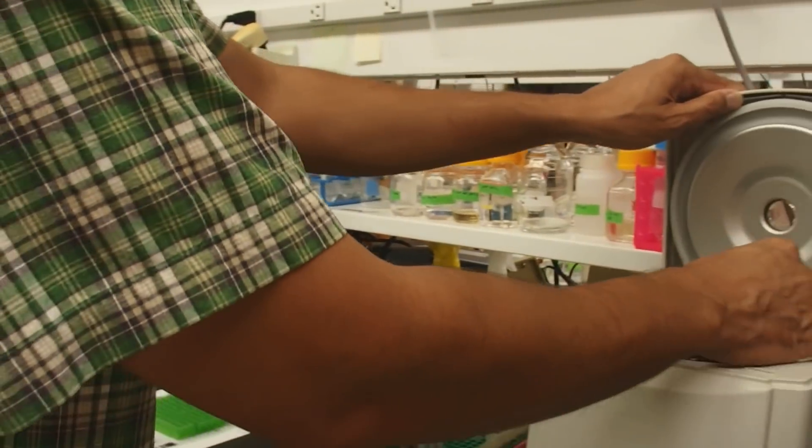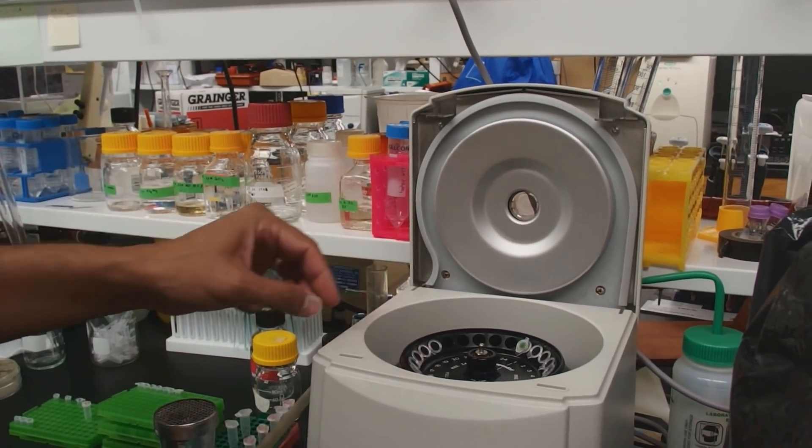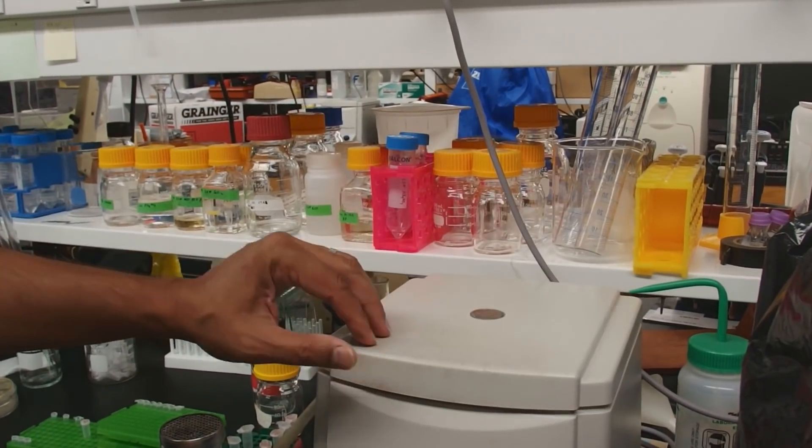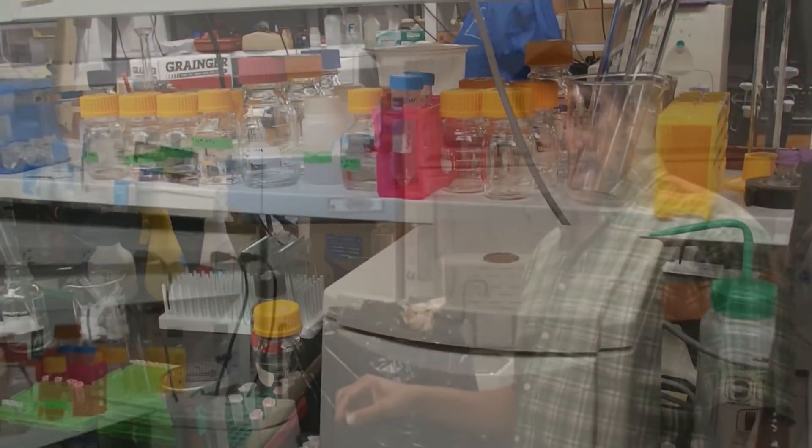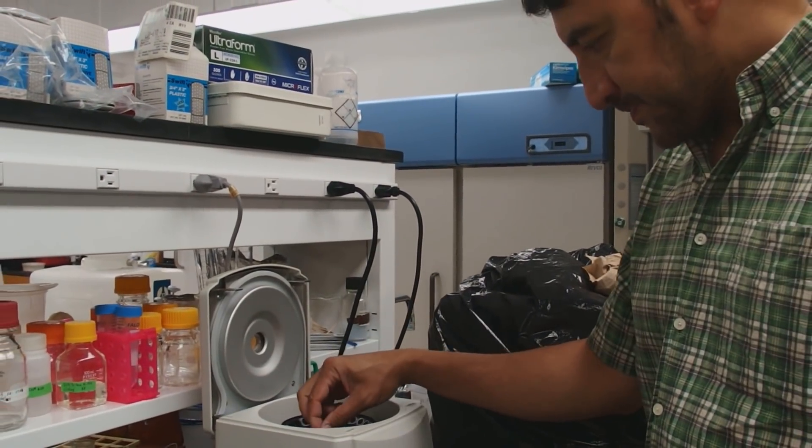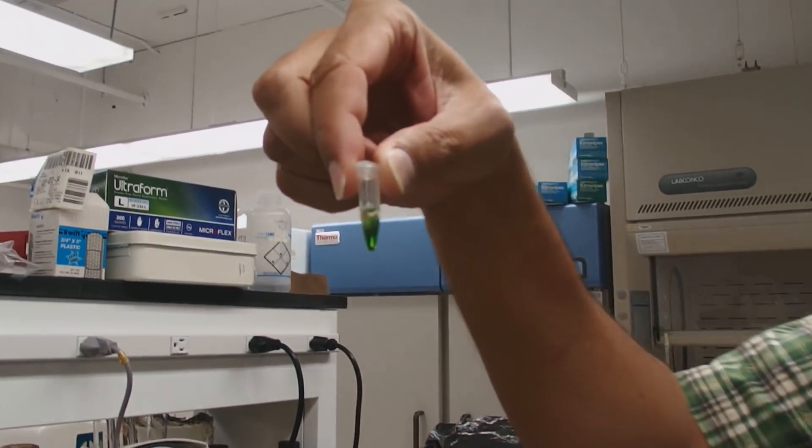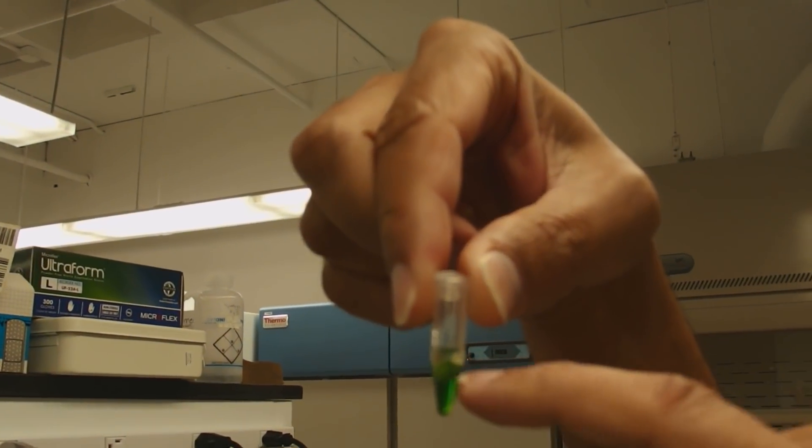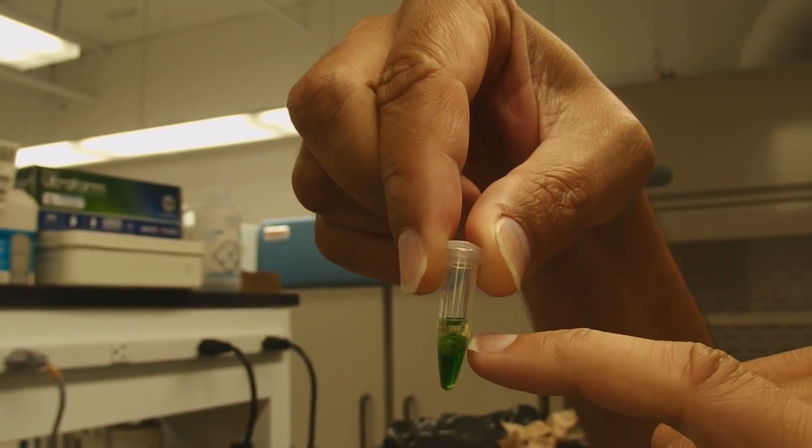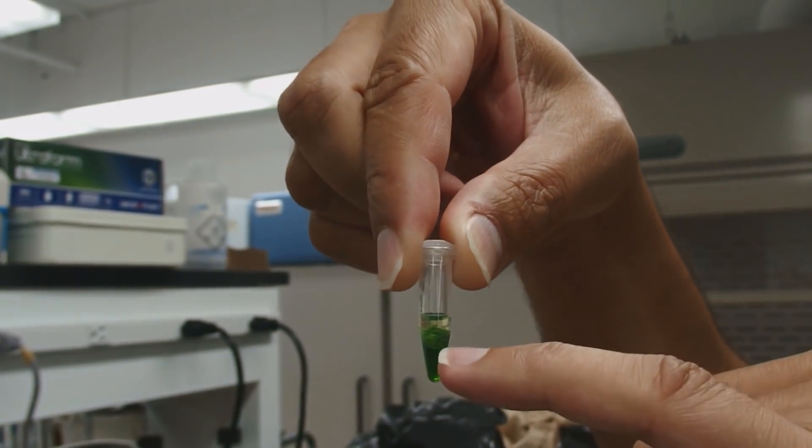Put it in our centrifuge. We're going to spin for one minute to separate the phases. All right, our spin is done. You can see that we've separated phases. On the bottom, we've got the green chlorophyll pigments and stuff in the chloroform phase. And then we have, at the interphase, we have a whole bunch of plant material, as you can see there.